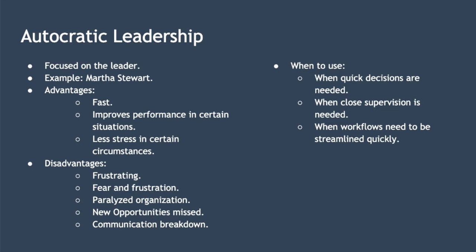There are still many situations where you should use autocratic leadership, such as when quick decisions are needed — for example, turning around a failing organisation or in a military situation. It's useful when close supervision is required, such as when existing management is too lenient. It can also work well when workflows need to be streamlined quickly, enabling subordinates to just get on with things without worrying about the bigger picture.